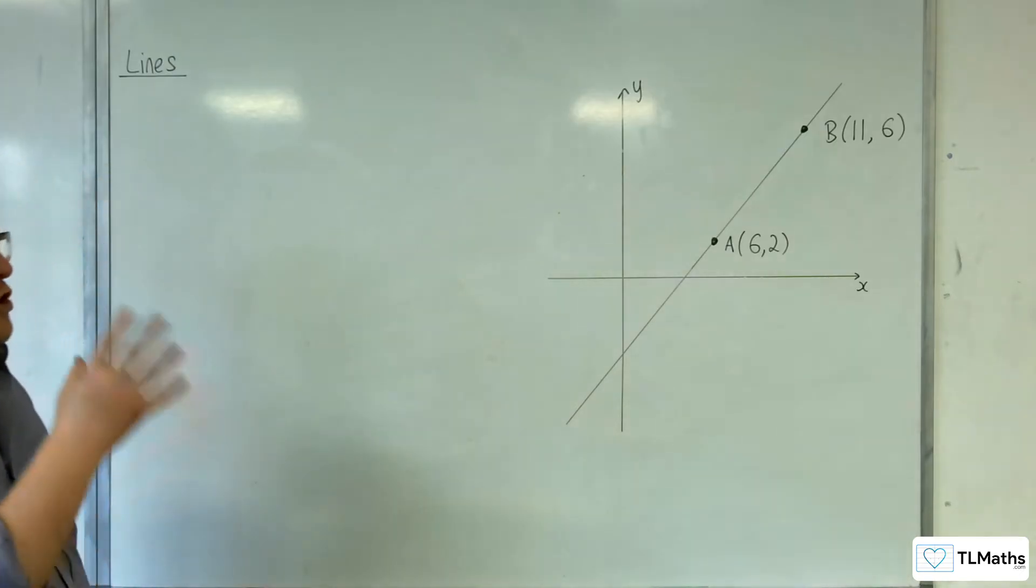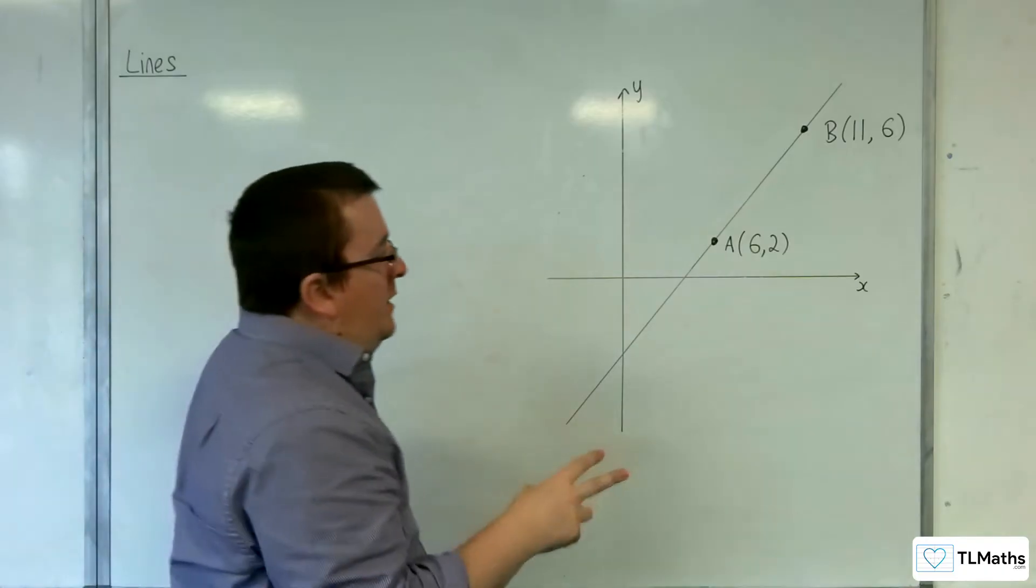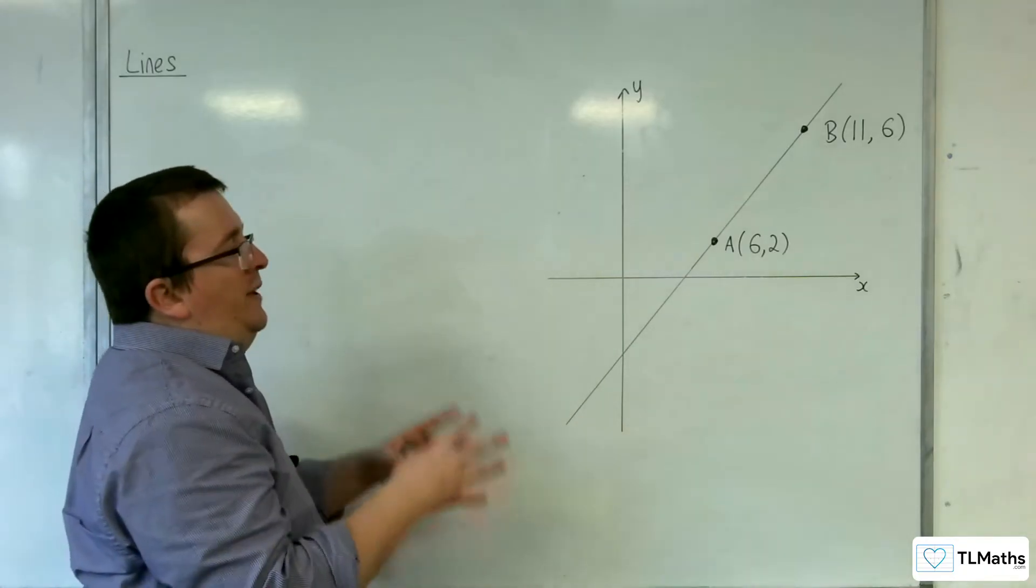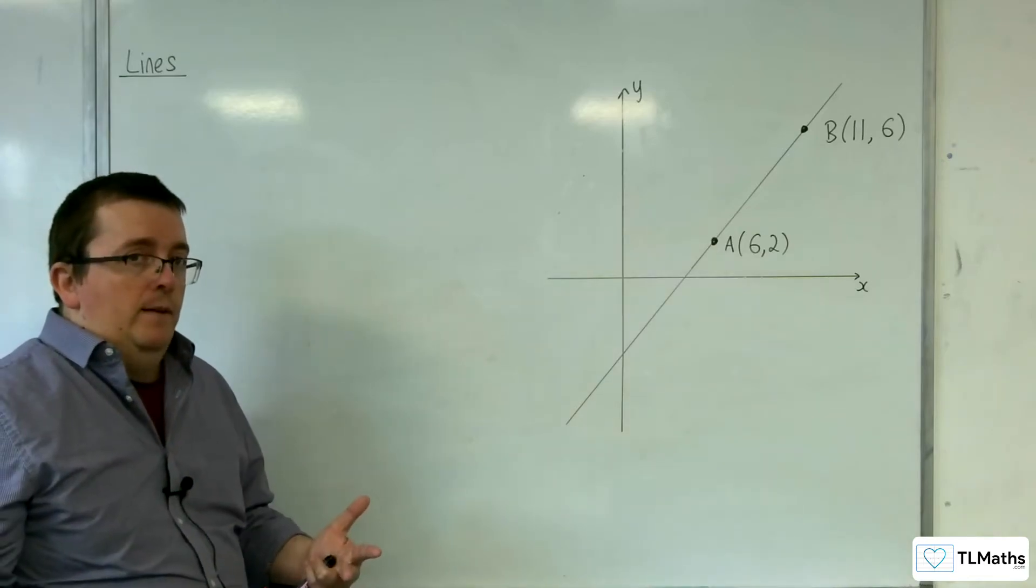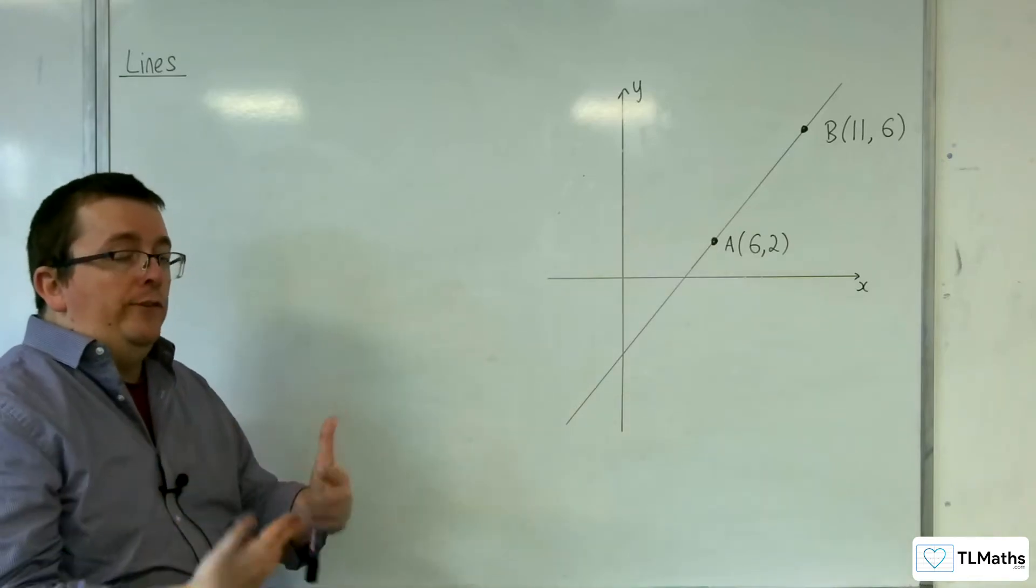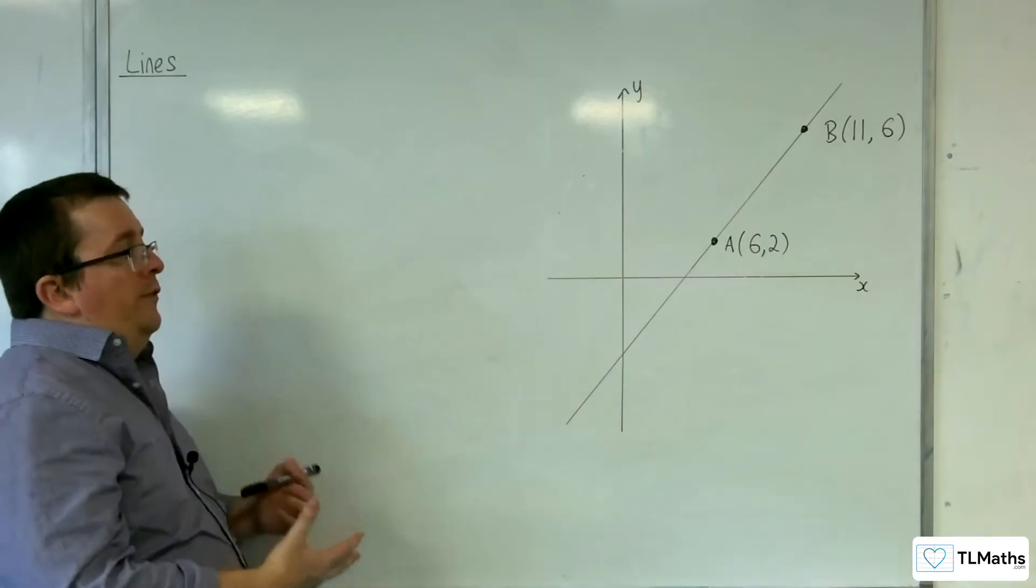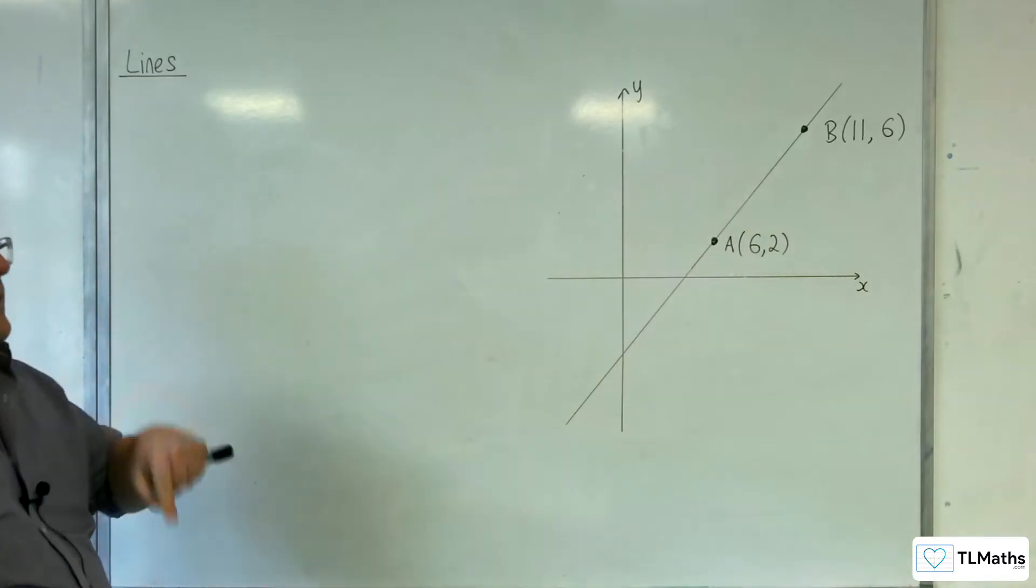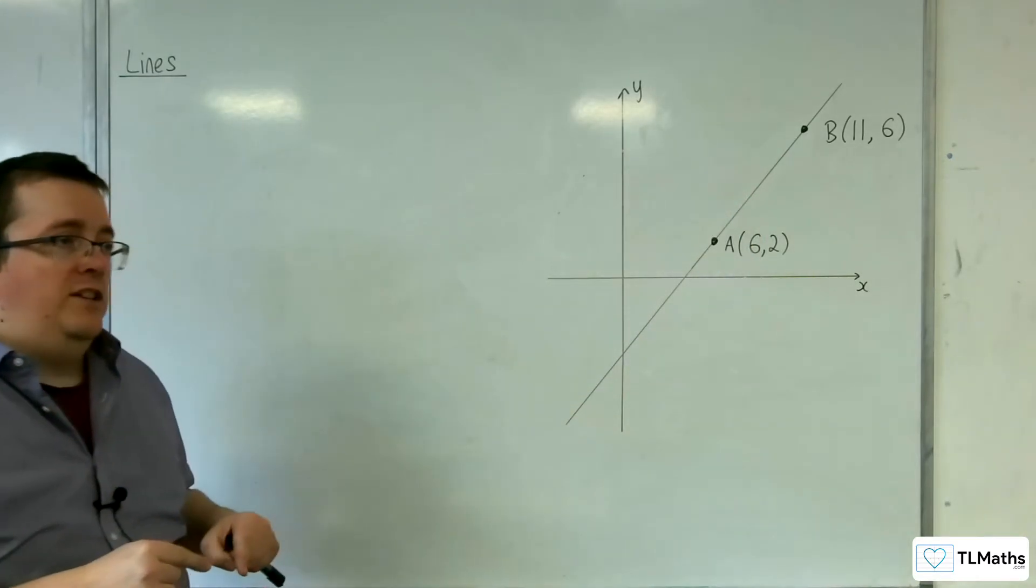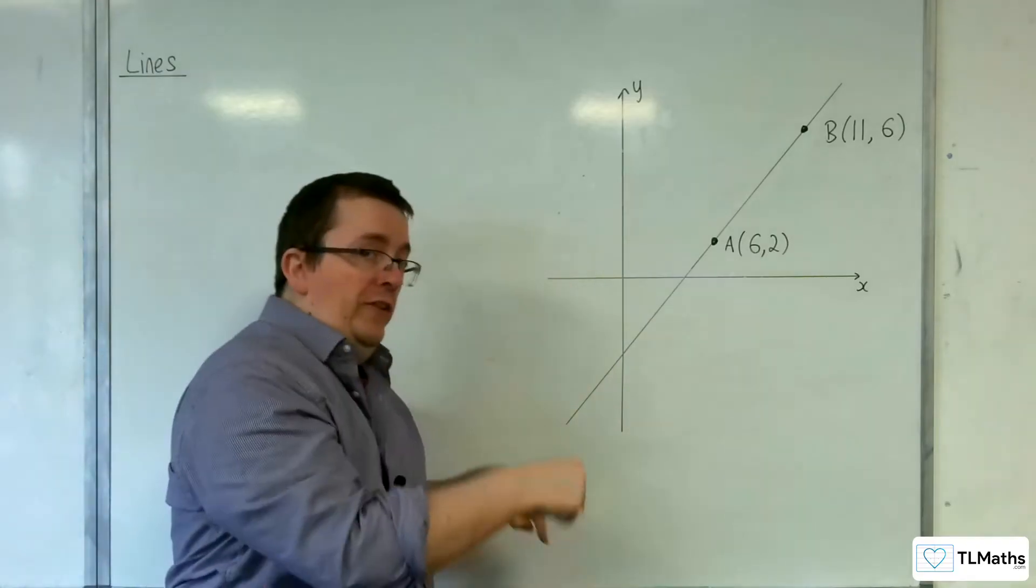So how can we describe this line using vectors? The whole idea is that we want to be able to get from the origin, because remember, vectors are instructions of how to get from one point to another. We want to end up always on this line. So the first thing we're going to do is get from the origin onto the line.